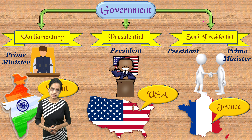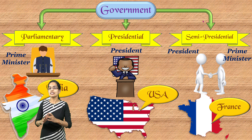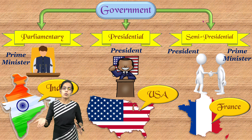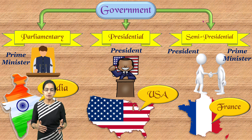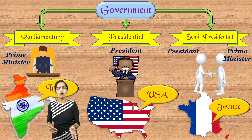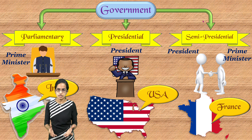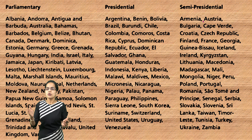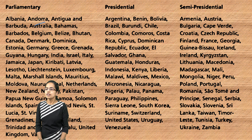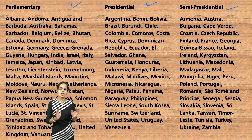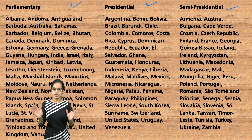Then we have the semi-presidential form of government, which is a unique combination where both the prime minister and president hold powers, but the portfolios are different for them. Good examples are France and erstwhile Russia. We have a complete list of nations that follow the presidential and the prime ministerial form of government, covering presidential, parliamentary, and semi-presidential systems.